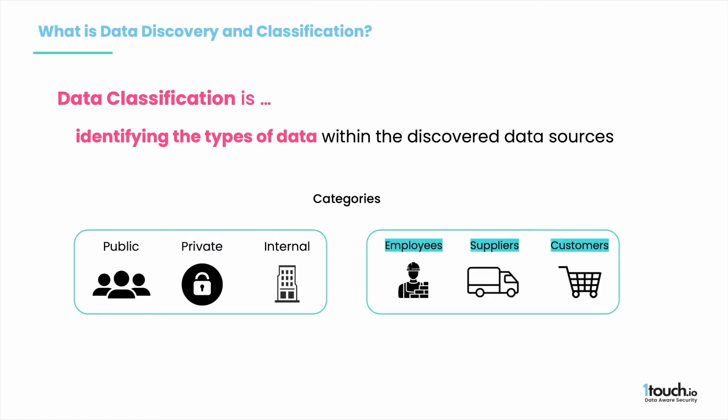Or data can be grouped based on roles — employees, suppliers, and customers. Data classification informs how you should treat and protect your data. It also helps identify data governed by regulations like GDPR in the European Union and enables you to implement the controls required to achieve compliance.